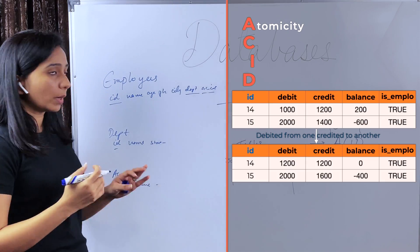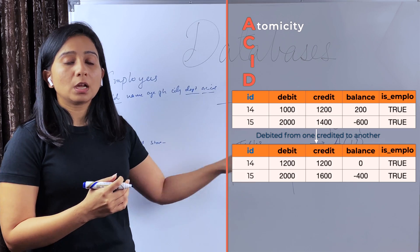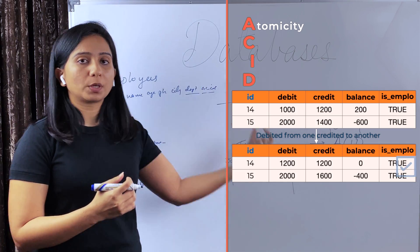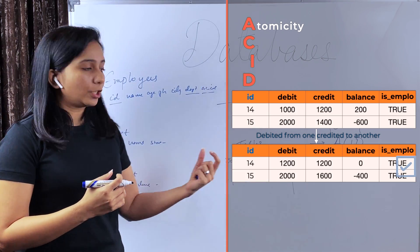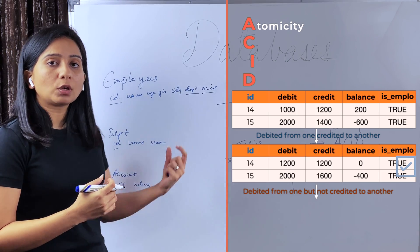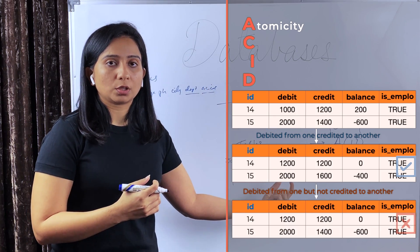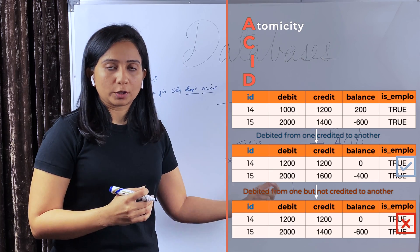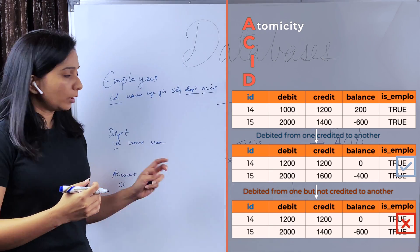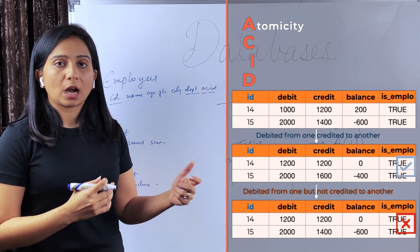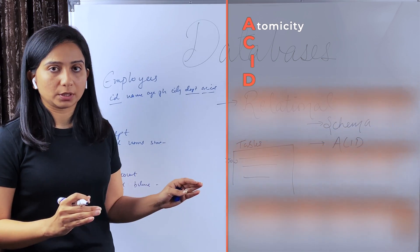So for example, if you have to transfer money from one account to another account, the transaction should deduct money from one account and put money into the another account. But it should not happen that it deducted from one account and didn't update into the another account. So that is breaking the rule of atomicity. Relational DBs ensure that all the transactions are atomic. Either they happen completely or they don't happen at all.